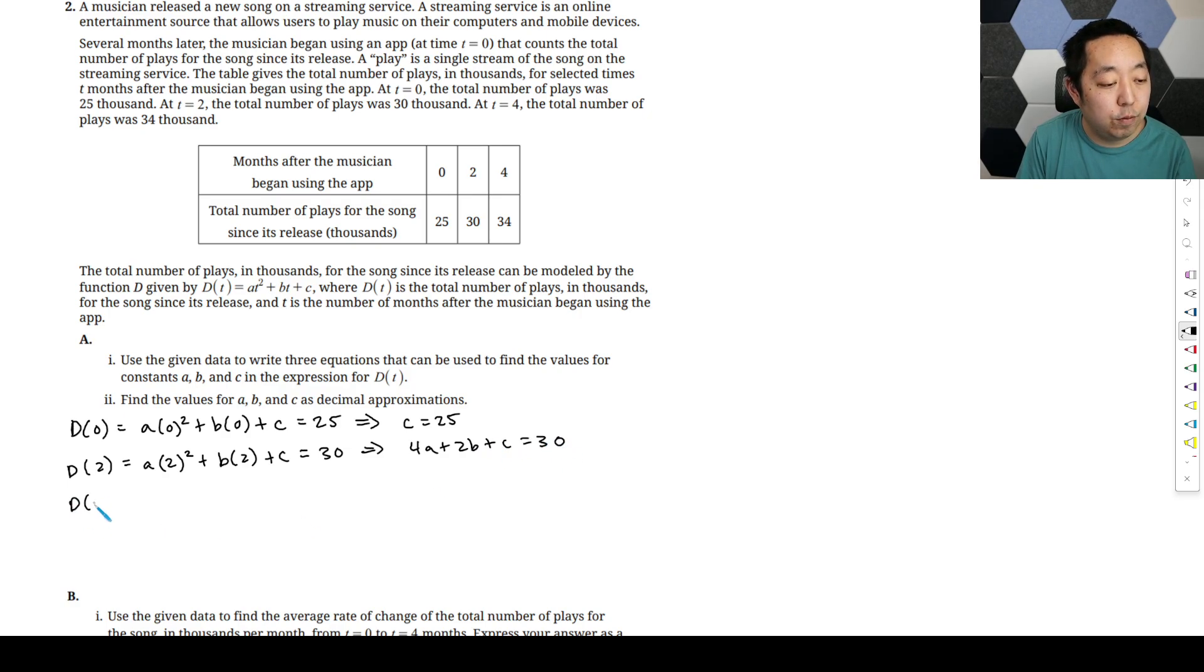And then D(4) is plugging in four for the t. It's going to be four squared plus b times four plus c equals 34. And so we're just going to get 16a plus 4b plus c equals 34. So that's our system of equations.